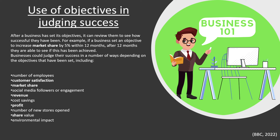After a business has set objectives, it can review them to see how successful they have been. For example, if a business set an objective to increase market share by 5% within 12 months, after 12 months they are able to see if this has been achieved. Businesses could judge their success in a number of ways depending on their objectives, including: number of employees, customer satisfaction, market share, social media followers or online engagement, revenue, cost savings, profit, number of new stores opened, share value, and environmental impact. There are many different ways to judge success from objectives.